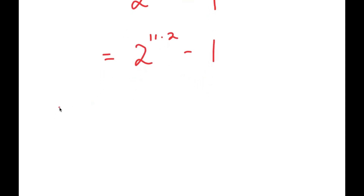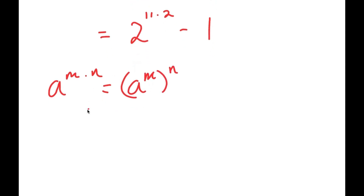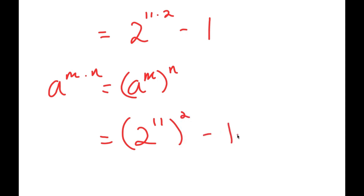If I have something in the form a to the power of m times n, this is equal to a to the power of m to the power of n. So, 2 to the power of 11 times 2 is equal to 2 to the power of 11 to the power of 2 minus 1.